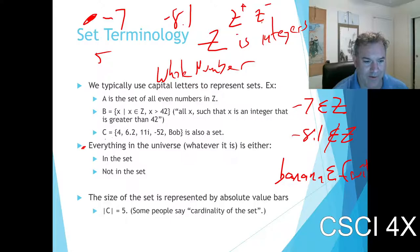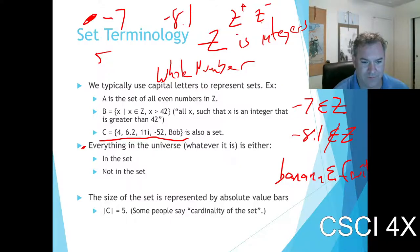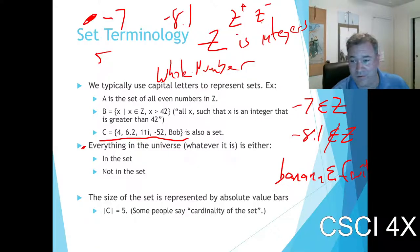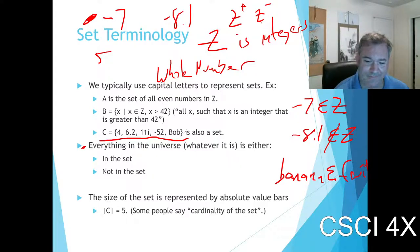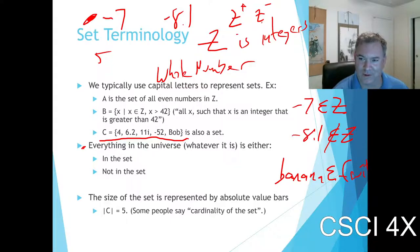You can define a set however you want — like set C includes Bob, and 6.2, and 4, and 11 times i, where i is the square root of negative one. Nobody's going to stop you. That said, there's a famous paradox — if you're not careful, you can run into contradiction, which is the big no-no in critical thinking.